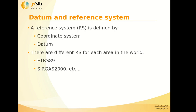A reference system is defined by the coordinate system and the datum, and there are different reference systems for each area in the world. We can have ED50, as we saw, or ETRS89, which is the current projected reference system — for example, in Spain and in Europe.